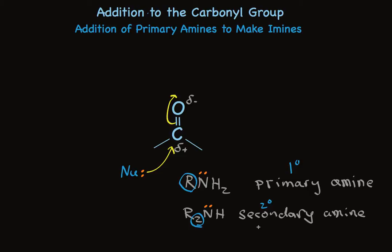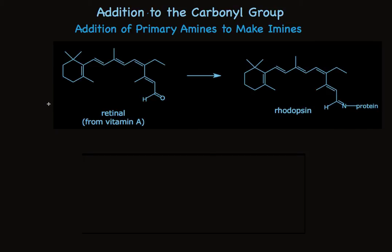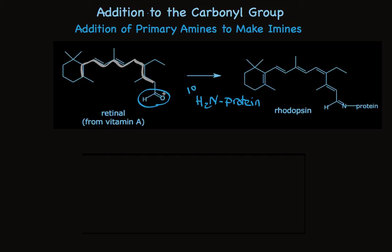You might be wondering if addition of amines to carbonyl groups is important. The extended pi system of retinal, derived from vitamin A, is the key structural component responsible for the chemistry of vision — it is the conjugated double bonds that are responsible for the absorption of light in the visible region. This molecule also has an aldehyde at the end of the chain. Retinal can't perform its function unless it's bound to a protein, and that binding is through addition of an amino group to the aldehyde to make an imine. It's the reaction of a primary amine with the aldehyde that forms rhodopsin, the key biologically active molecule in vision.